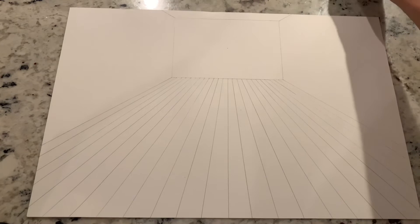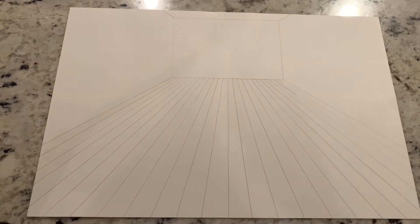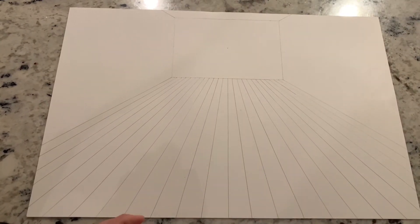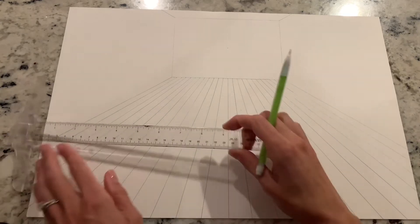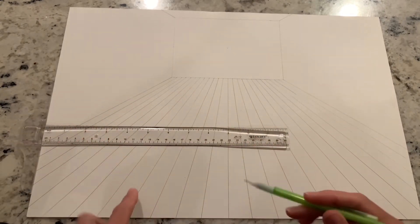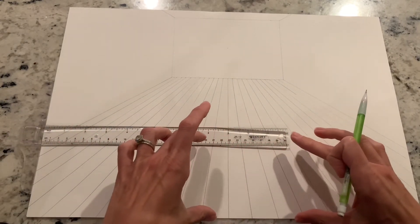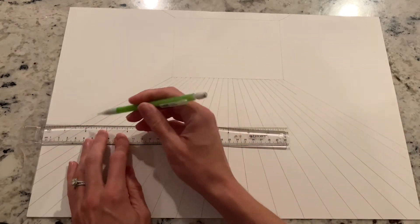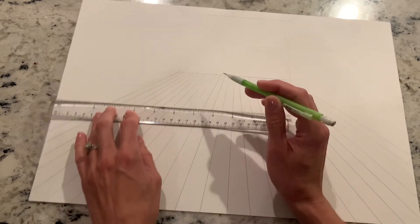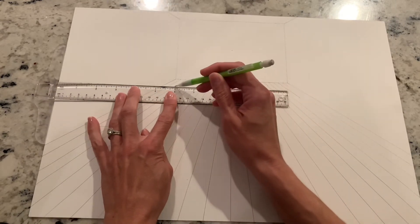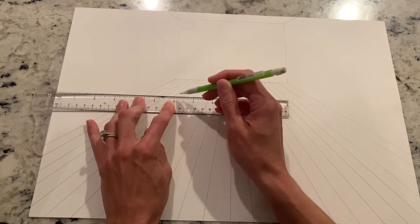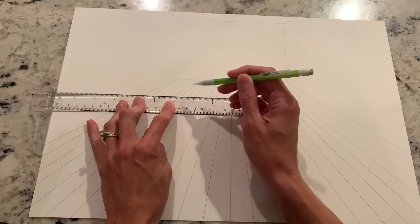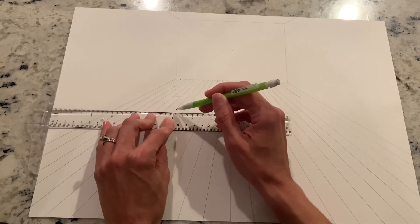Once you have all of the convergence lines drawn, you're going to draw horizontal lines completely at random. You want to place them further apart in the foreground and closer together as they get further away, but completely at random wherever you want. When you lay wood floors, the whole point is that they look random.